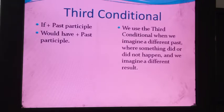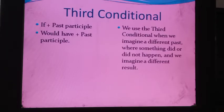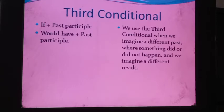We use the third conditional when we imagine a different past where something did or did not happen, and we imagine a different result. So it's very clear that we imagine: if this would happen, this would be the result, or if this would not happen, that would be the result. That is called a conditional sentence — we put some condition that due to this condition this work was done, or due to this condition this work was not done.